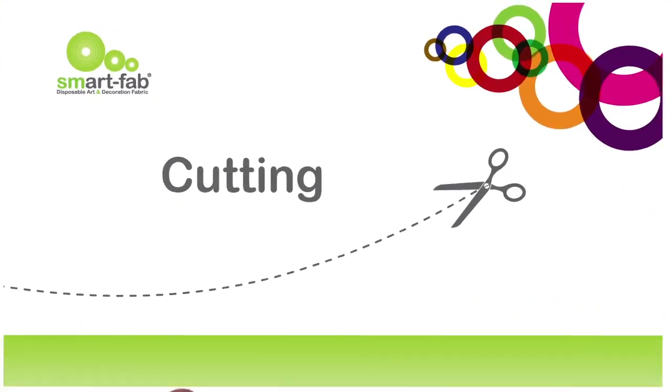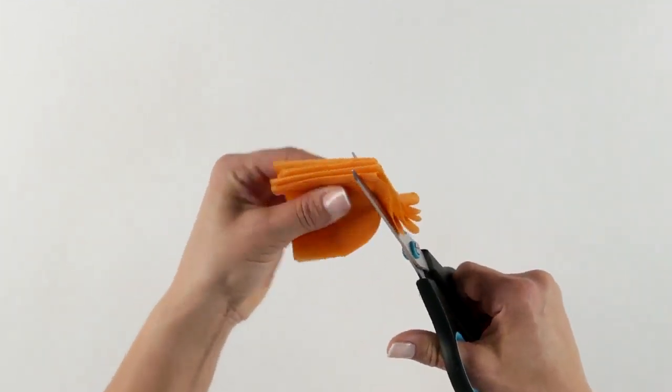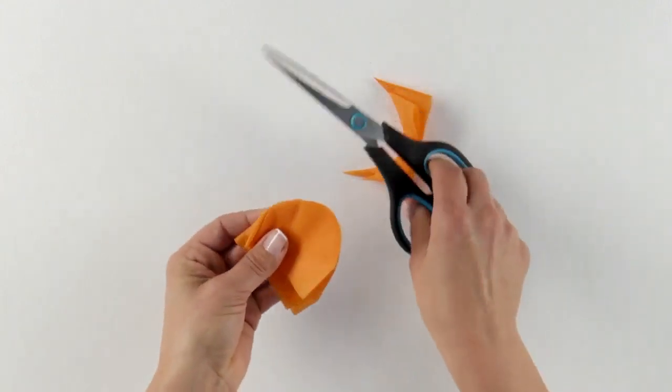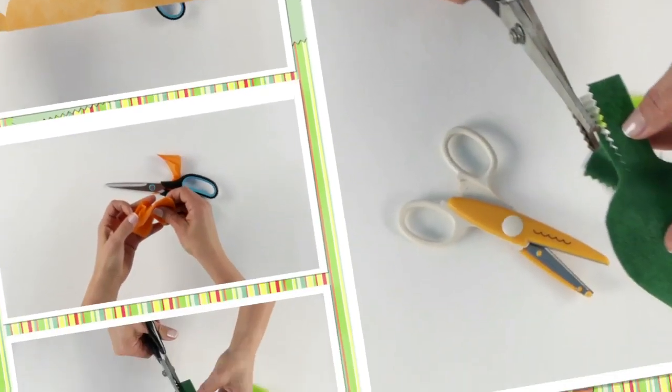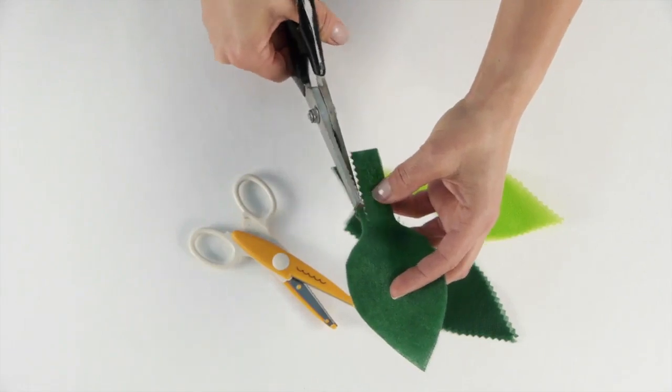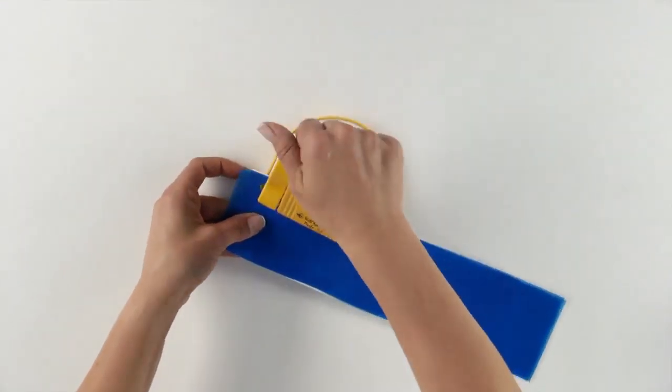Cutting and trimming. SmartFab is a non-woven fabric, so it won't fray. You can cut and trim it with scissors, kinking shears, cutting knives, paper punches, and die-cutting machines.